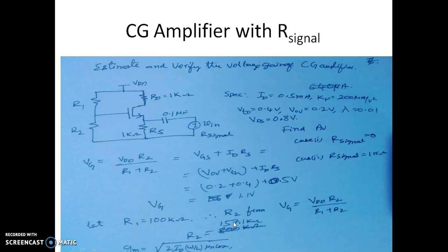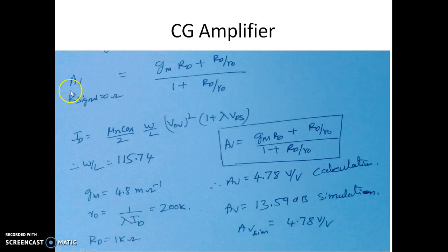And the expression for AV with R signal 0 is given by gm into Rd plus R0 by R0 divided by 1 plus Rd divided by R0.